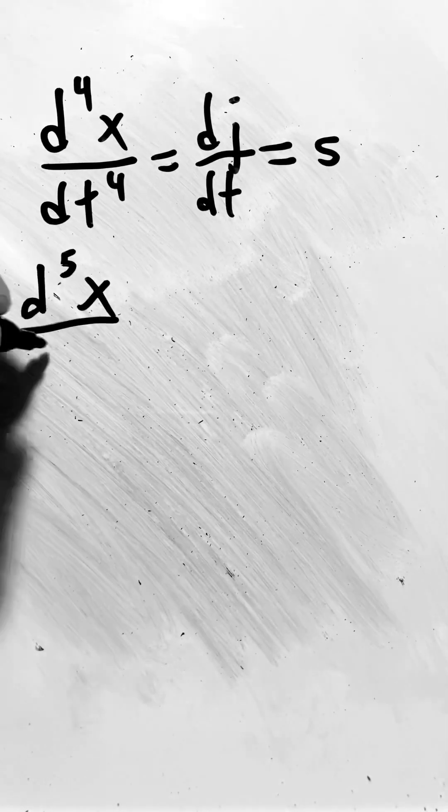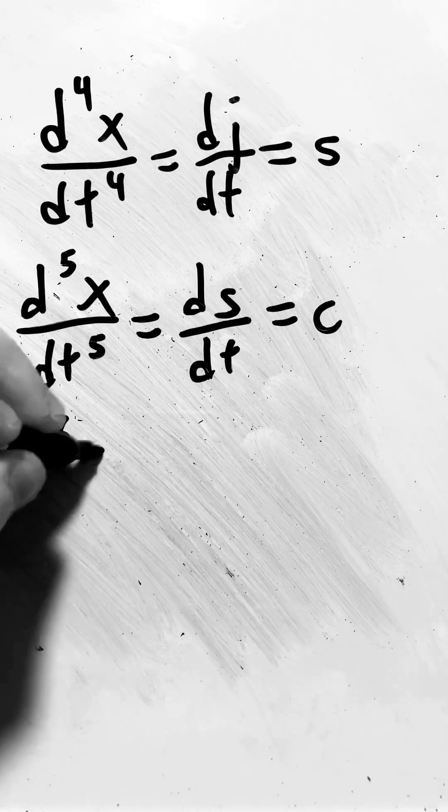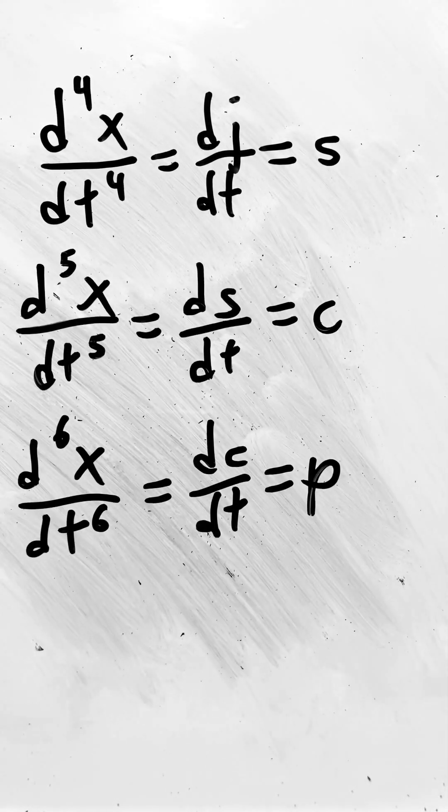We can take the fifth derivative of the position, which is the derivative of s, and that is c. And we take the sixth derivative of x, which is the derivative of c, which is p.